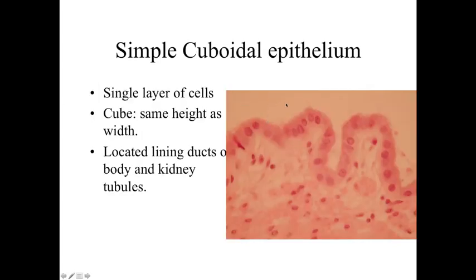A simple cuboidal epithelium — again, look for the space at the top. The basement membrane is here, with connective tissue underlying it. One cell layer thick, so it's a simple epithelium, and the cells are roughly the same height as they are wide, so they're cuboidal. You can find simple cuboidal epithelium lining ducts and kidney tubules.